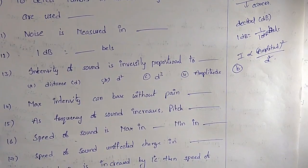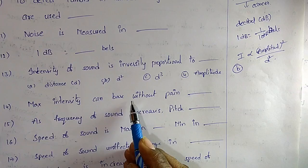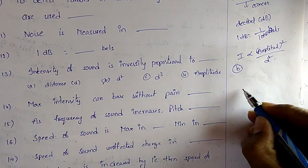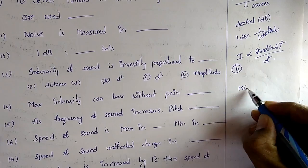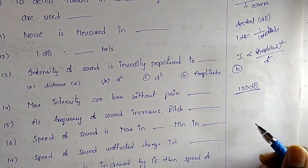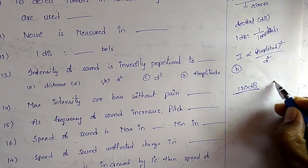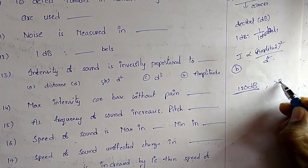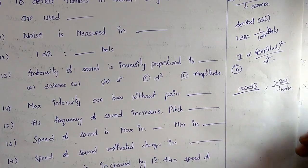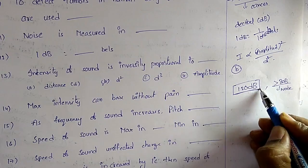Question 14: The maximum intensity a person can bear without pain is 120 dB. We consider sound greater than 80 dB to be noise, but a person can bear up to 120 dB without pain.